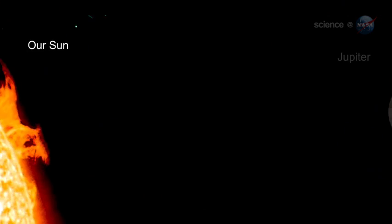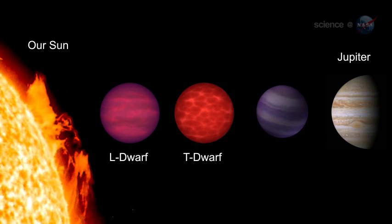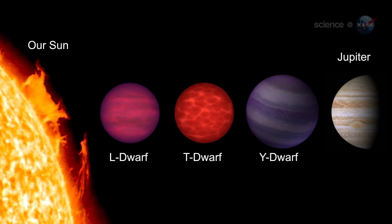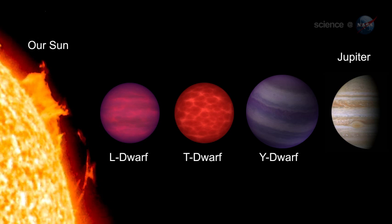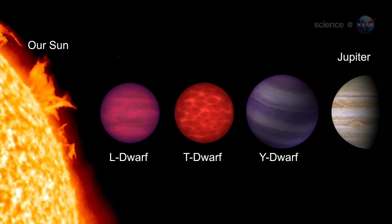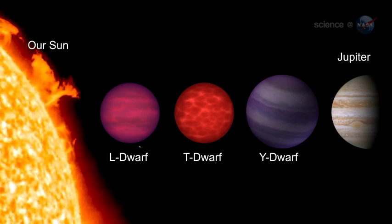How can a star be so cool? The Y-dwarfs are the chilliest members of the brown dwarf family. Brown dwarfs are sometimes referred to as failed stars. They are more massive than planets, yet not quite massive enough to fuse atoms in their cores. Brown dwarfs do not burn with the inner nuclear fires that keep stars like our sun shining steadily for billions of years.